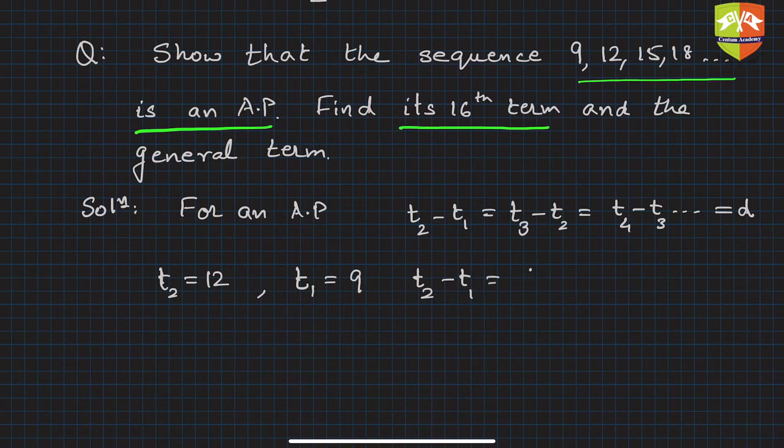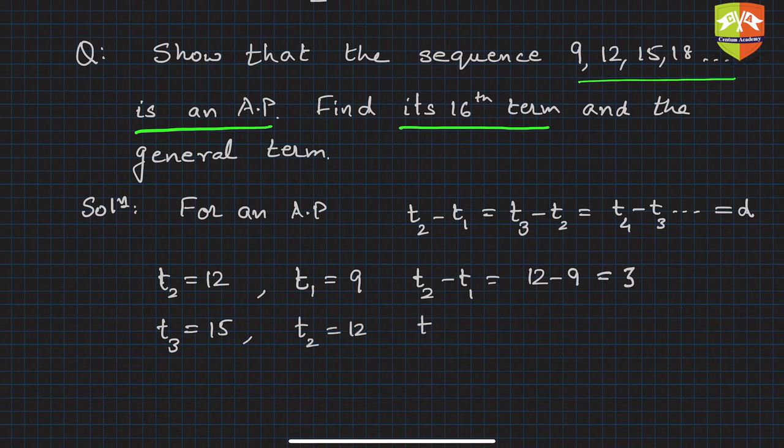Right, let's check if this common difference is the same. t3 is 15, t2 is 12, so hence t3 minus t2 is equal to 15 minus 12, this is also equal to 3.